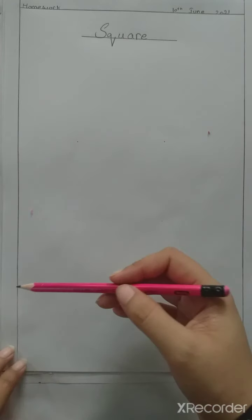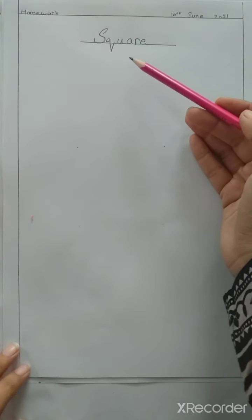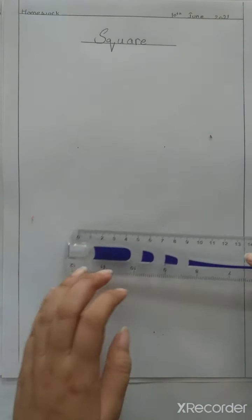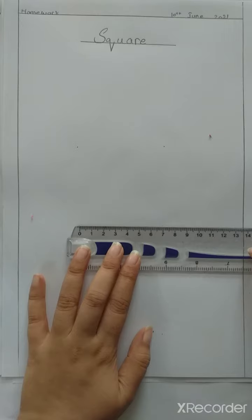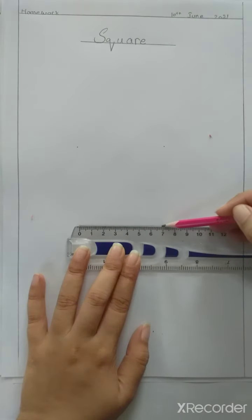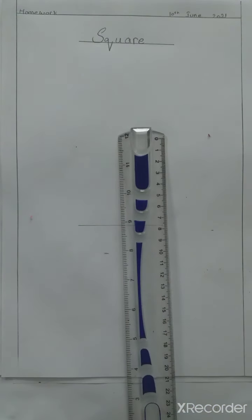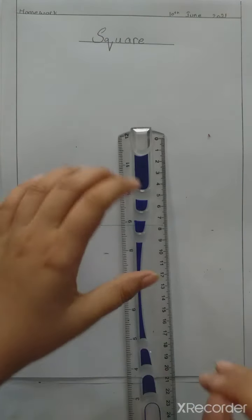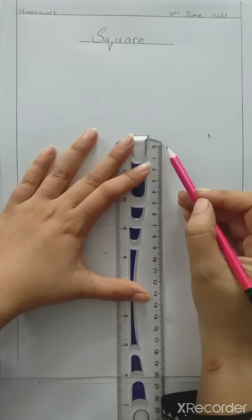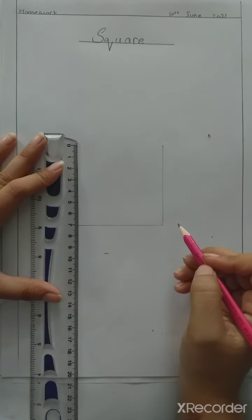Students, prepare the page with margin line, mention the date, and give the Square heading — which is the third diagram in our shapes. Students, for this, first draw a 7 cm horizontal line. A square has 4 equal sides, so you have to draw 7 cm vertical lines on both sides.